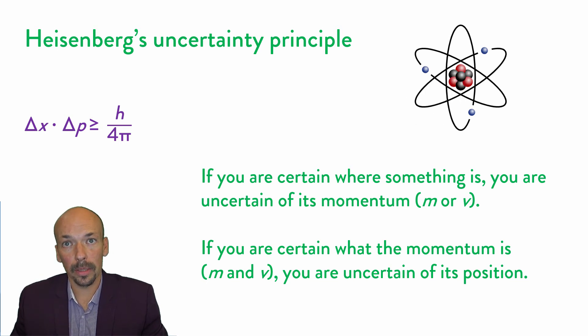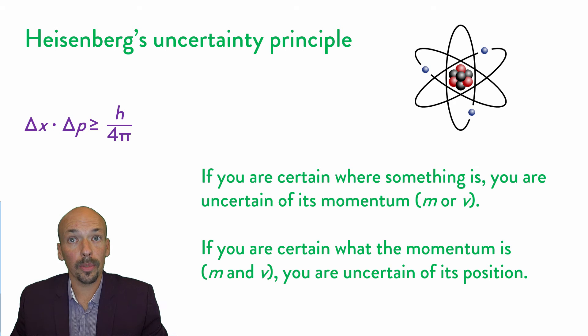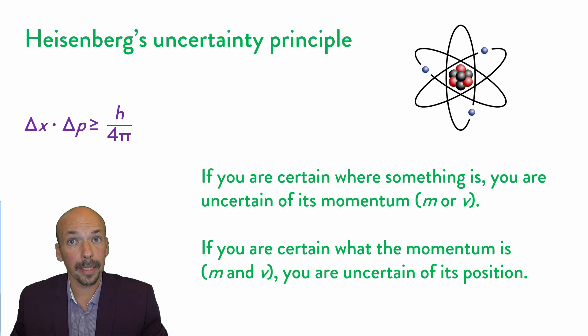The minus charge of the electron and the positive charge of the nucleus do attract. Still, because of Heisenberg's uncertainty principle, they cannot actually be there and stay there.